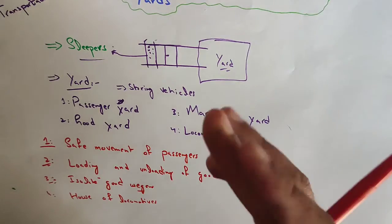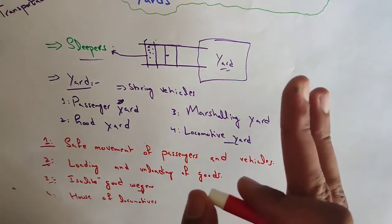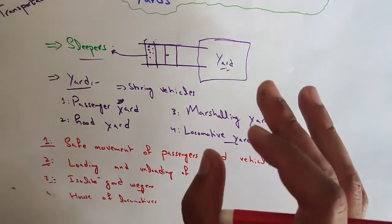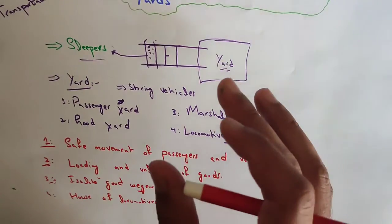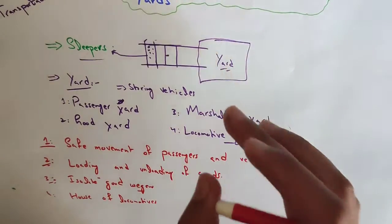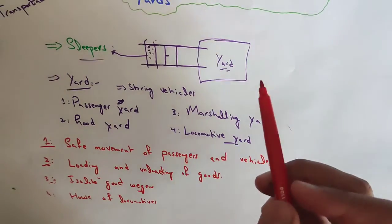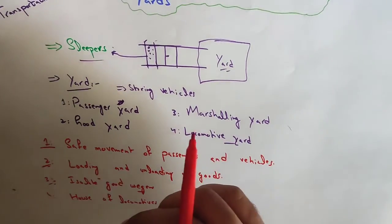The yard layout is designed depending upon the number of locomotives required. If you have to accommodate 100 locomotives at a time, you should have capacity of more than 100 at this yard for proper functioning. These were the yards, their four types, and sleepers.